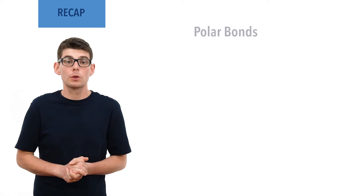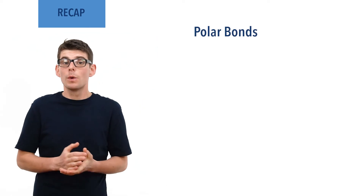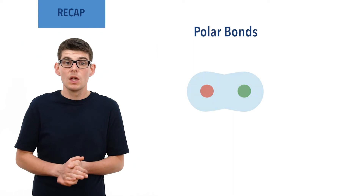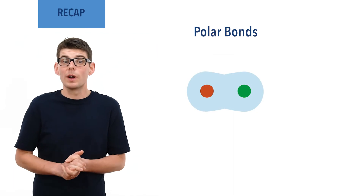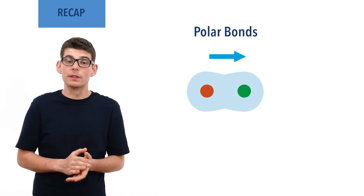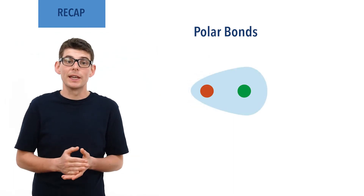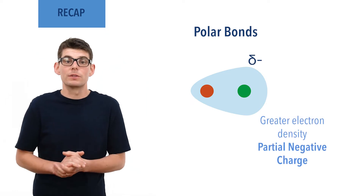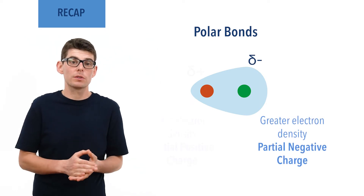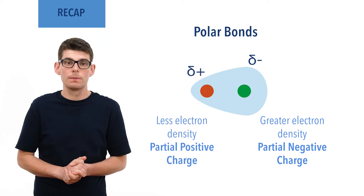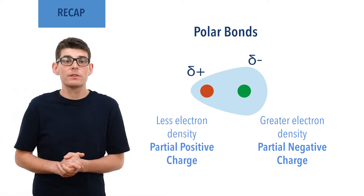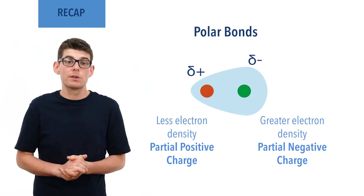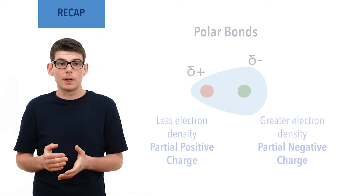A polar bond or molecule arises when electrons aren't evenly distributed between bonded atoms. One atom will have more electron density around it than the other, giving it a partial negative charge. The atom with less electron density around it will have a partial positive charge. The greater the polarity of the bond, the more the electrons in it are unequally distributed, and the weaker the bond becomes.